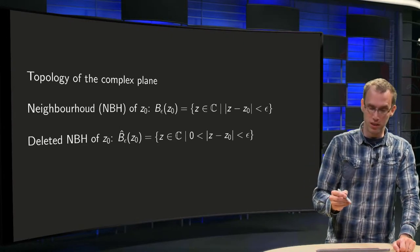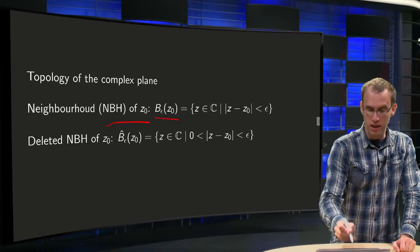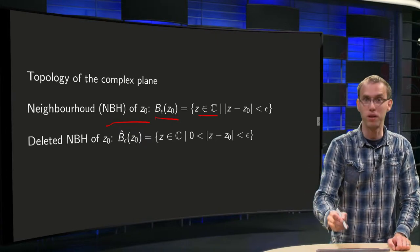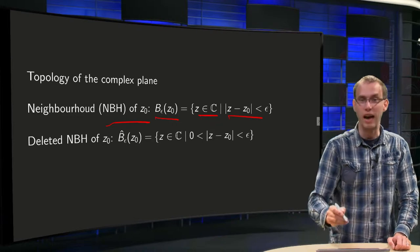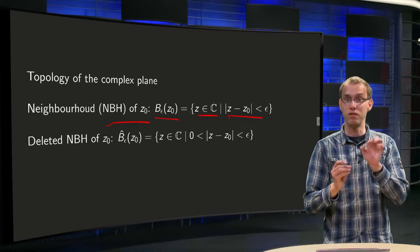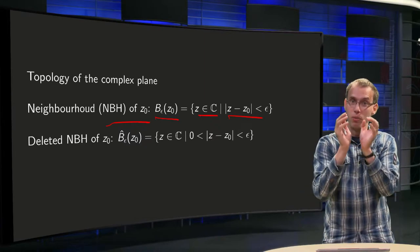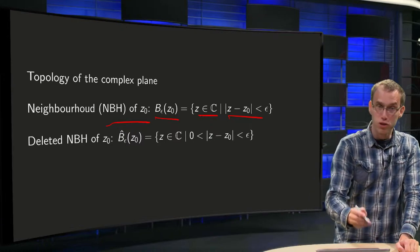First we need the notion of a neighborhood. A neighborhood of z₀, B_ε(z₀), is a set of points z in the complex plane which are at most at a distance ε of z₀, so a small disk centered at z₀ with points closer than ε to z₀.